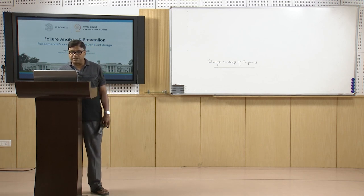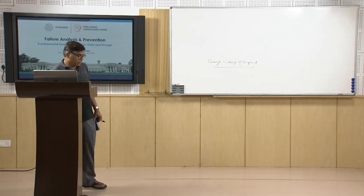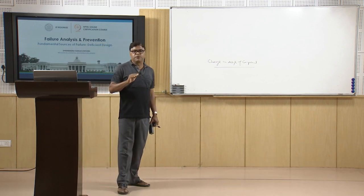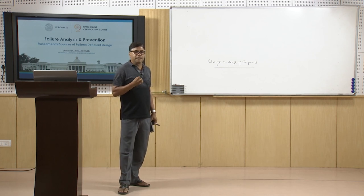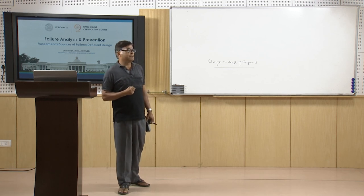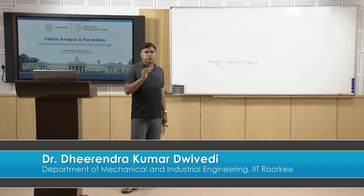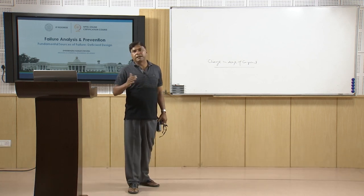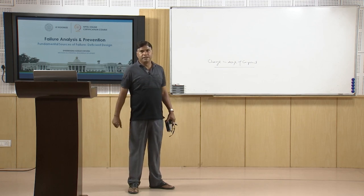The corrective action recommended as a result of this failure analysis was that the hole depth should be kept such that the root of the hole remains about 25 mm away from the high stress areas where change in cross-section was taking place. The stress concentration was found too high at the bottom of the hole, where feed marks from drilling also reduced the load-carrying capacity of the spindle and caused fatigue failure.